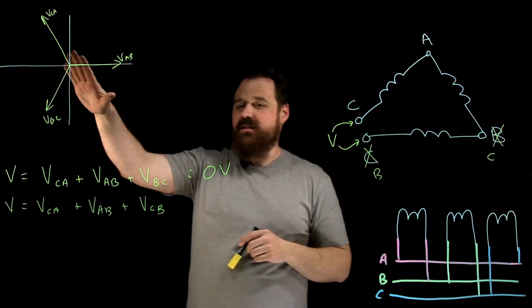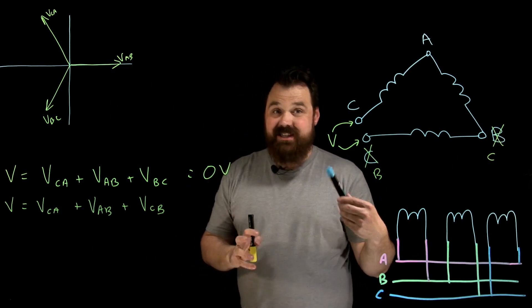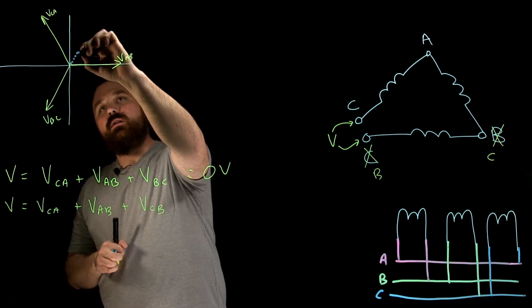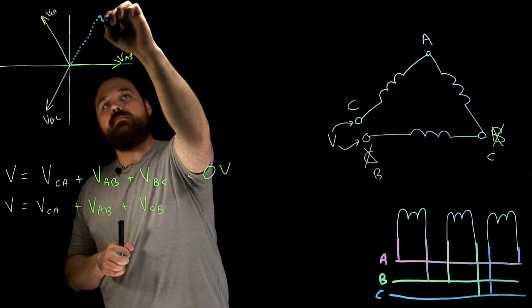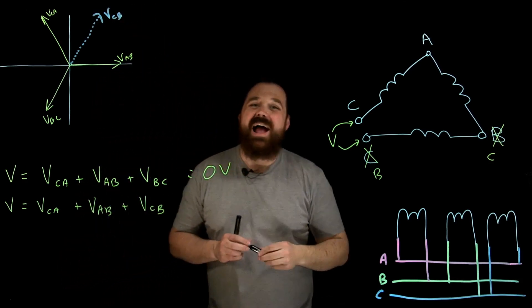C to A is the same. A to B is the same. But where does C to B lie? Well, B to C is here at 240. That means V C to B would be up here at 60 degrees.